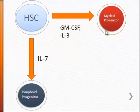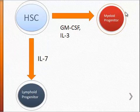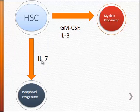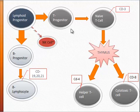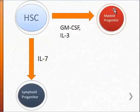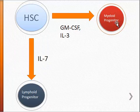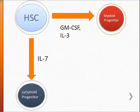Let's look at our lymphoid progenitor, which - remember - forms under the influence of interleukin-7. The lymphoid progenitor is different from the myeloid progenitor in that the myeloid progenitor produces cells of the innate immune system, while the lymphoid progenitor produces cells of the adaptive immune system.